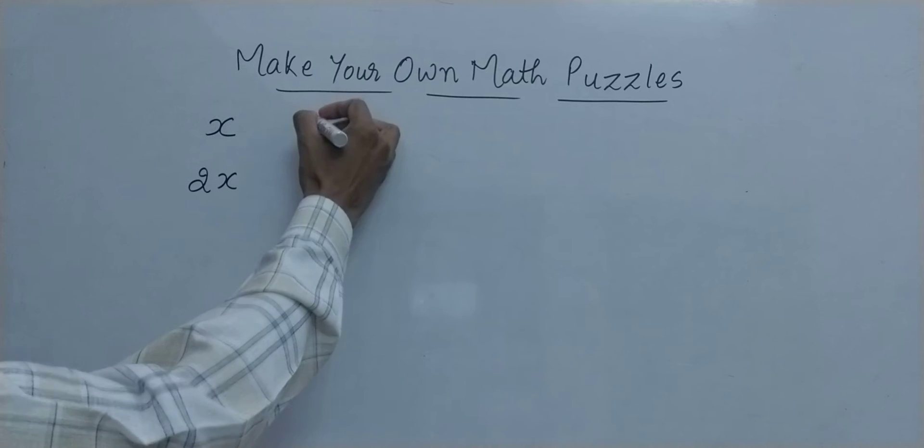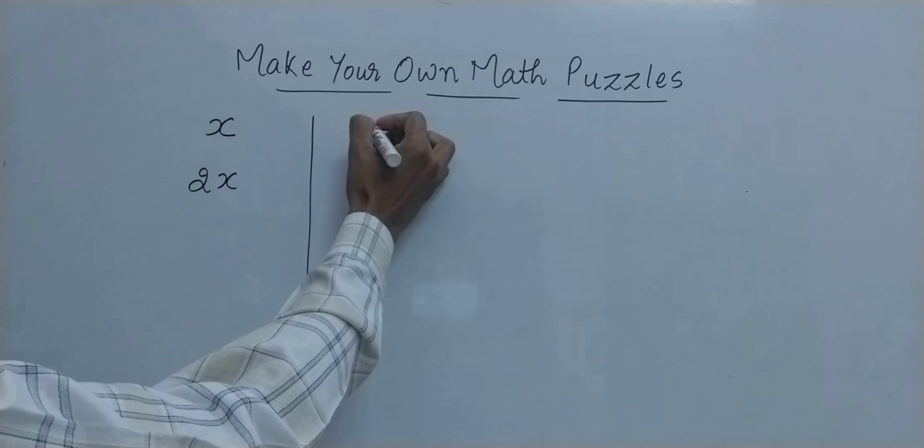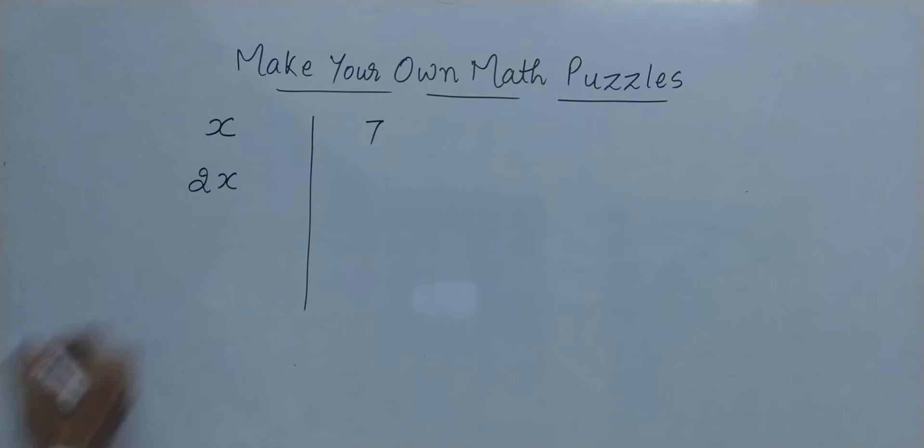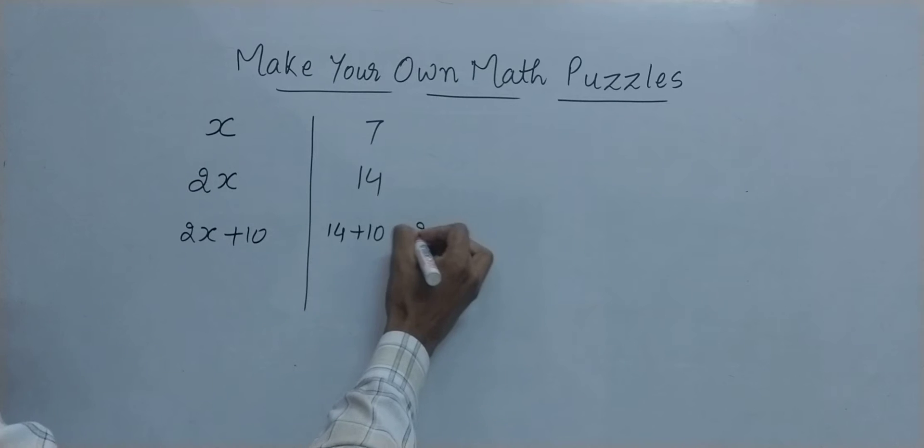I'll take an example simultaneously. Suppose he chooses 7. Now 7 times 2 is 14, so he does it in his mind: 14. Then ask him to add 10 to that. So he adds 10 to 14 and gets 24 in his mind.